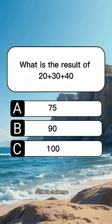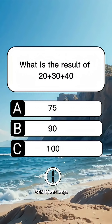What is the result of 20 plus 30 plus 40? Answer B, 90.